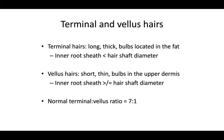Let's start with hair follicle anatomy. You have to know what terminal hair follicles and vellus hair follicles are. Terminal hair follicles are long, thick bulbs located in the fat layer — they reach all the way down to the fat. This can be an anagen hair follicle, but you can also have catagen and telogen hair follicles, which are still considered terminal. Most hair follicles in a normal scalp biopsy will be anagen.